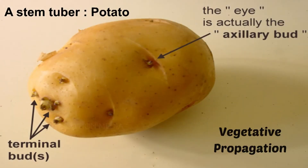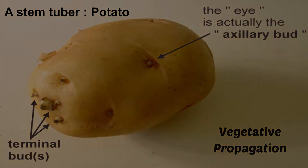Vegetative propagation is the best suited measure for maintaining hybrid vigour, since the desired characters are not lost and can persist over a long period of time.